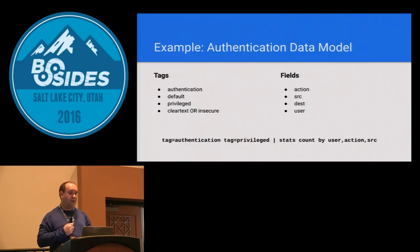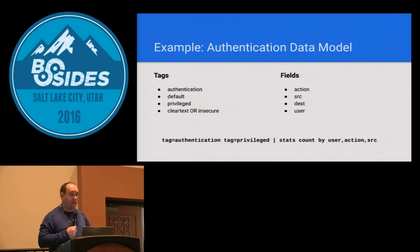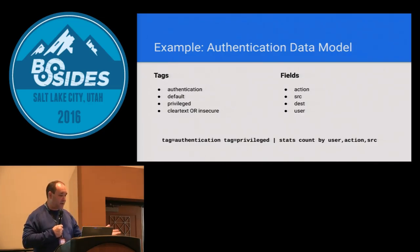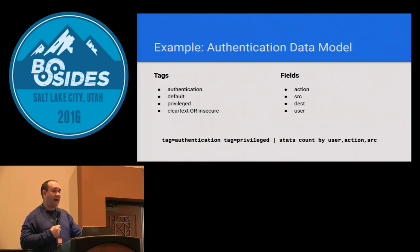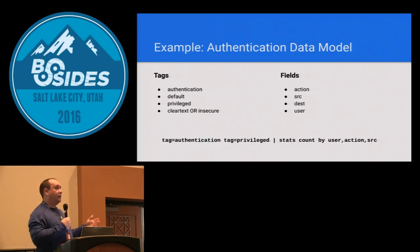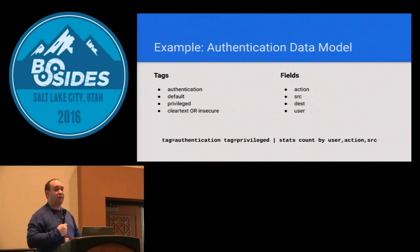Clear text — obviously if something's clear text. Some fields typically used with authentication: action (successful or failure), source (the source of the authentication), destination (where they authenticated), and user. Down below I have an example search: tag equals authentication AND privileged, then looking at count by user, action, and source. If you have all of your information feeding in correctly, that search will find any privileged authentication across all your authentication events and sources.